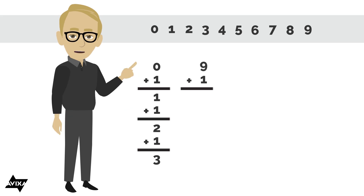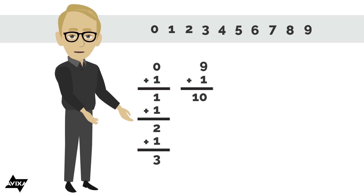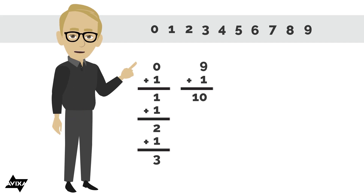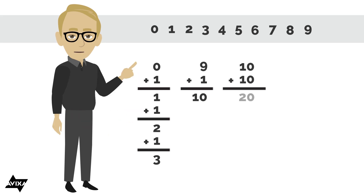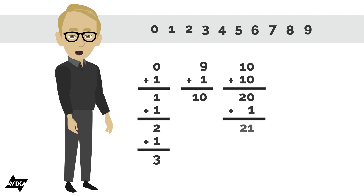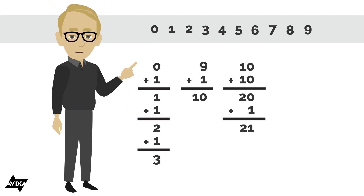That works until I try and add one more to 9. I don't have any more symbols, so we add a place. Now we have 10, and we call this the tens place. So now I can add 10 plus 10, and that gives me 20. I can even add 1 to 20, and that gets me to 21. So now I can make changes in multiples of 10 or multiples of 1.